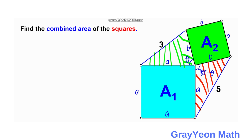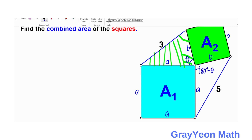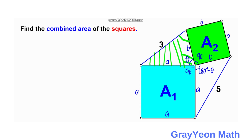Why is the second angle 180 degrees minus theta? Because these four angles at the shared vertex form a complete revolution of 360 degrees. Subtracting the two 90-degree interior angles of the squares gives 360 minus 180 = 180 degrees remaining, so the two unknown angles are supplementary — if one is theta, the other is 180 minus theta.